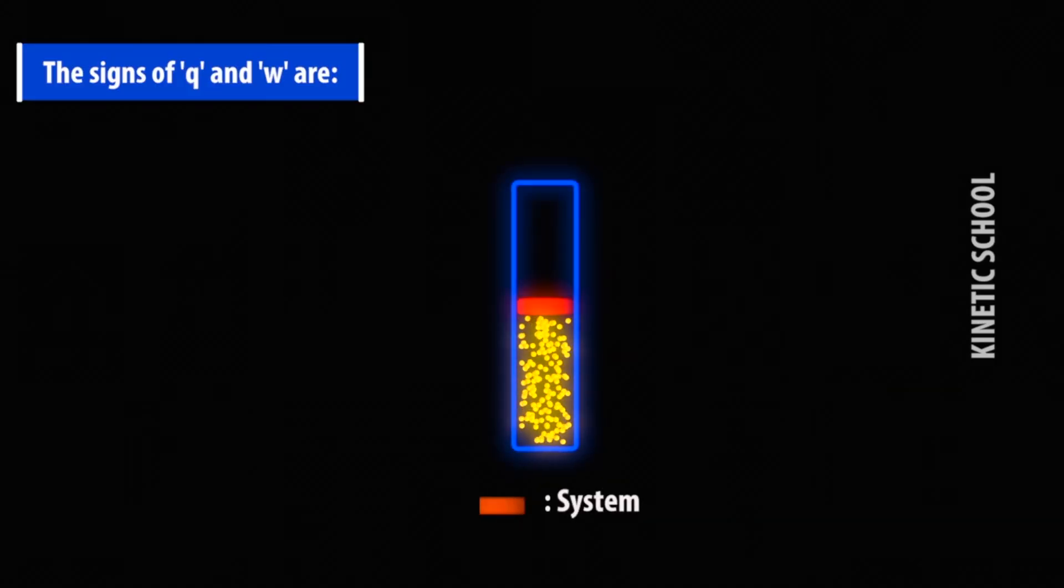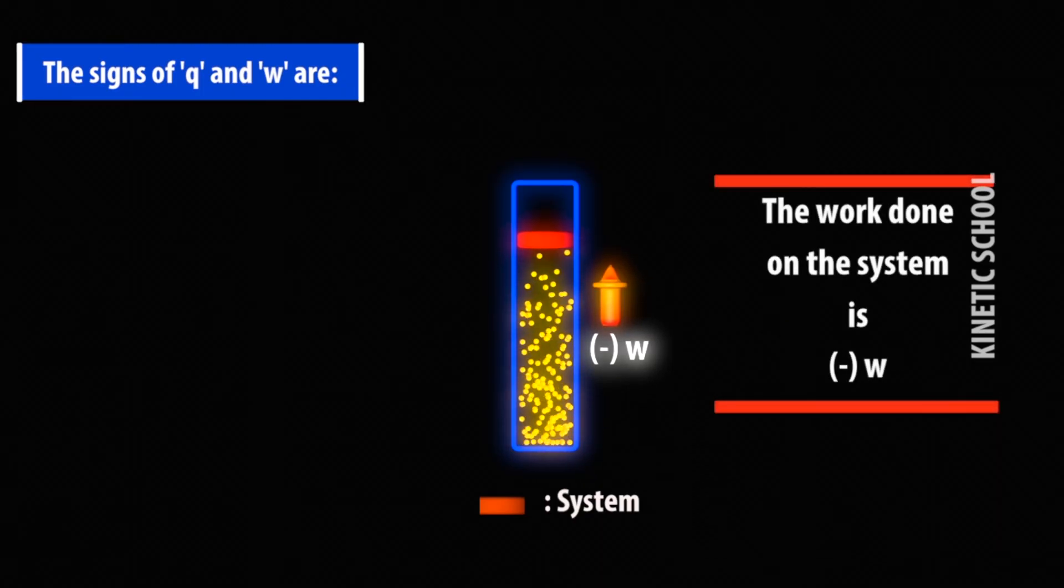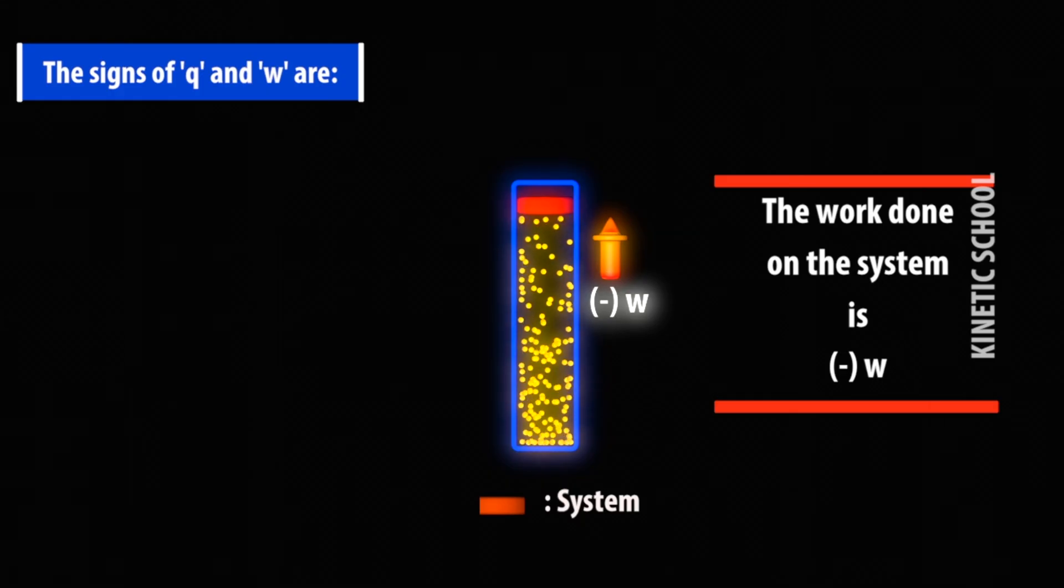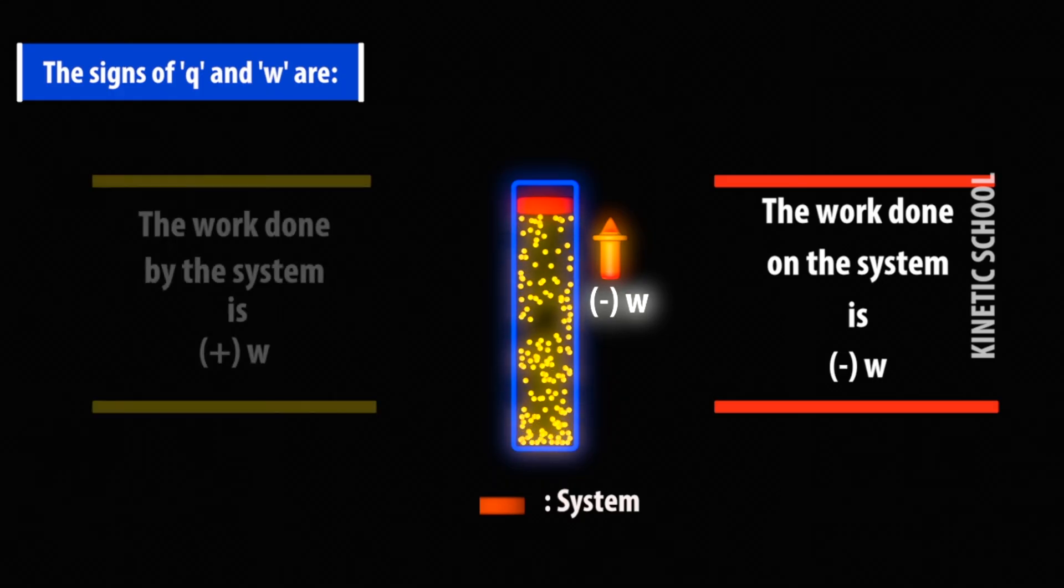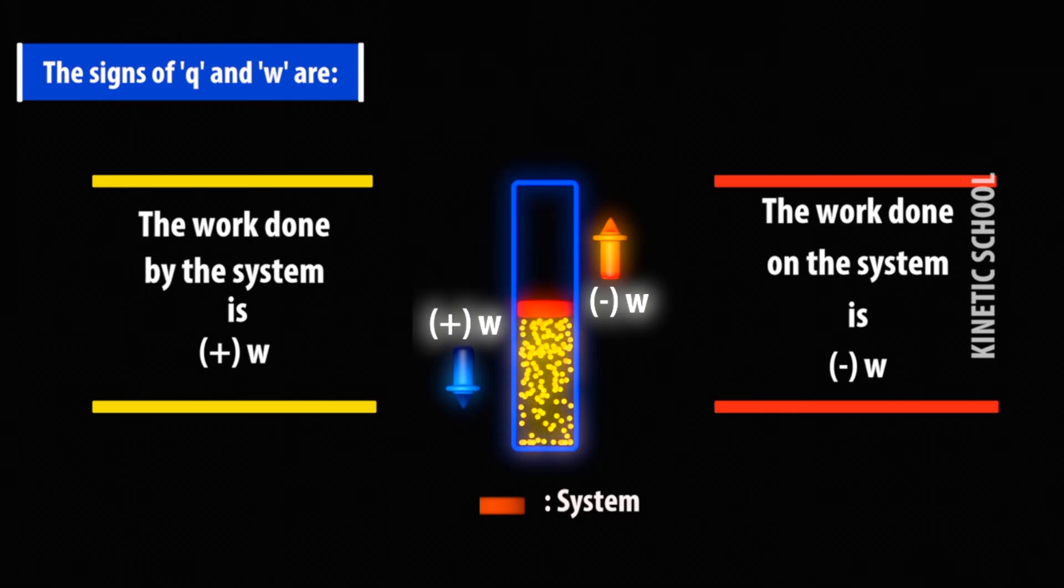The signs of Q and W are: When work is done by the system, the sign of W is negative. When work is done on the system, the sign of W is positive.